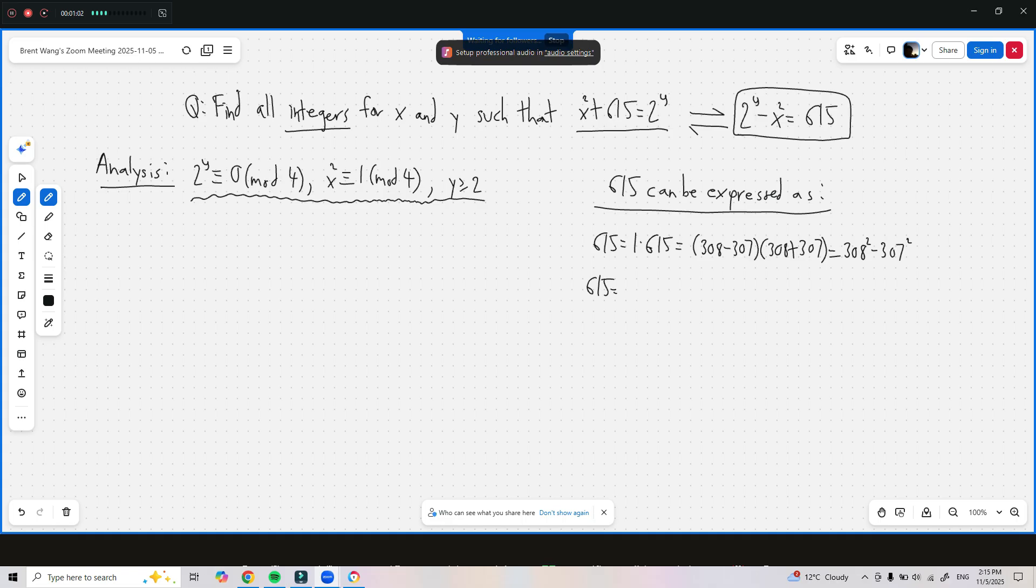615 can be expressed as 3 times 205, which is equal to 104 minus 101 times 104 plus 101, which is equal to 104 squared minus 101 squared.